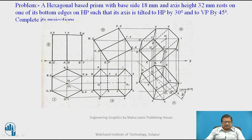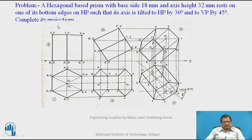Project this base edge CB vertically upwards. The axis height is 30 mm and the base side is 18 mm. Draw a hexagon of 18 mm side such that the base edges are perpendicular to VP and parallel to HP, and project it upwards to get the front view of height 30 mm. Name the points accordingly: CB projected gives B dash, C dash; D and A projected upwards gives A dash, D dash; and EF projected upwards gives E dash, F dash. The top face points are named 2 dash, 3 dash, 1, 4, 5, 6, with the axis overlapped by A1 or D4. We have completed the first stage — a rectangle as front view and hexagon as top view.